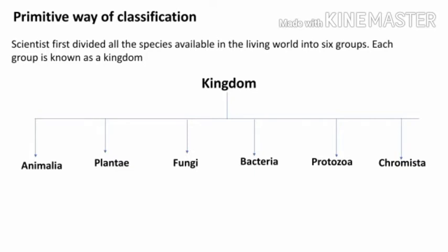Primitive way of classification: Scientists first divided all the species available in the living world into six groups. Each group is known as a kingdom.